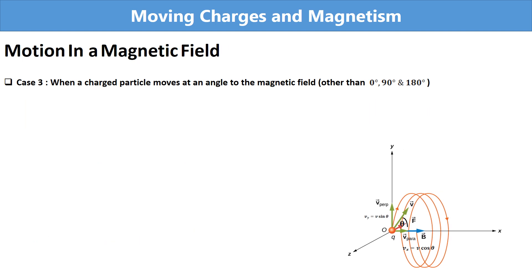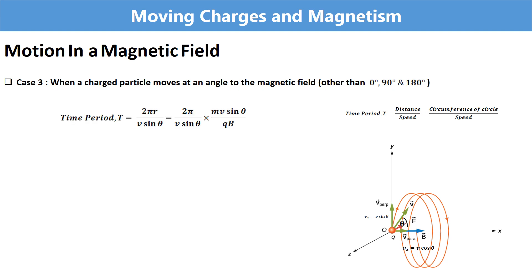Next is the time period. As in Case 2, the time period is the circumference of the circle divided by speed. If r is the radius, the circumference is 2πr. Here for velocity we use vsinθ, because vsinθ is the component responsible for circular motion. Substituting the expression for radius from the previous equation and rearranging, we obtain the equation for time period in Equation 2.